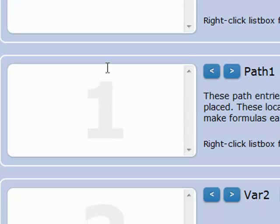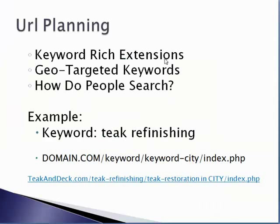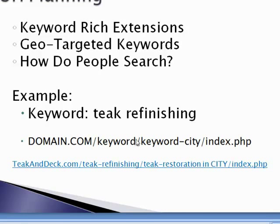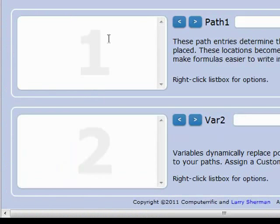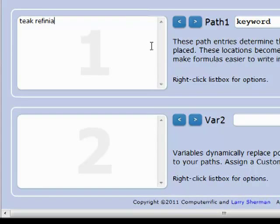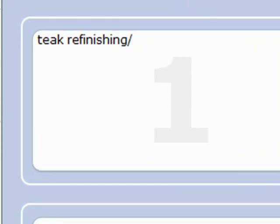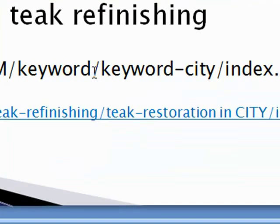The next thing to do is figure out our path. We already established a path — thinking about keyword-rich extensions like tqrefinishing and tqrestoration, and knowing we want to geo-target the keywords and think about how people search. We're going to go to domain.com slash keyword slash another keyword and then the city index. So in path one, we had our keyword, and that was tqrefinishing, with a slash because we want it to have a slash in there.